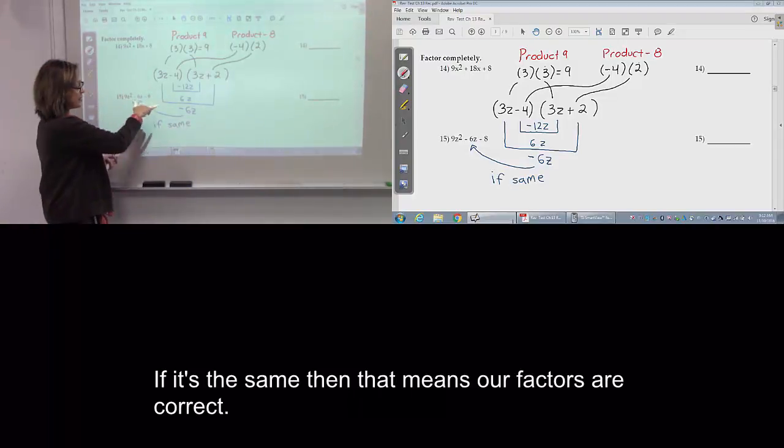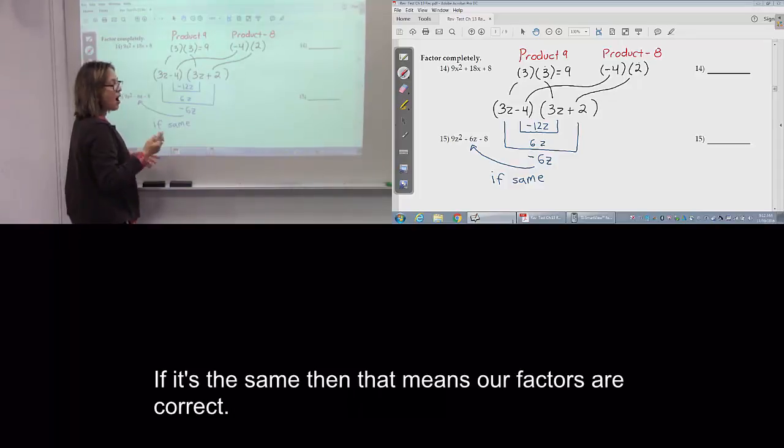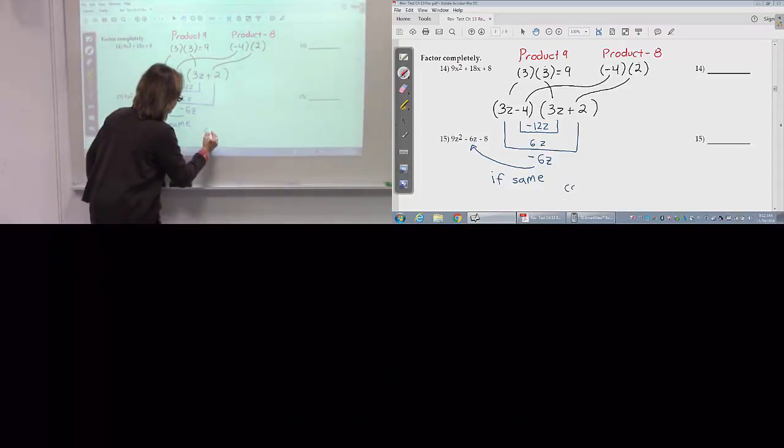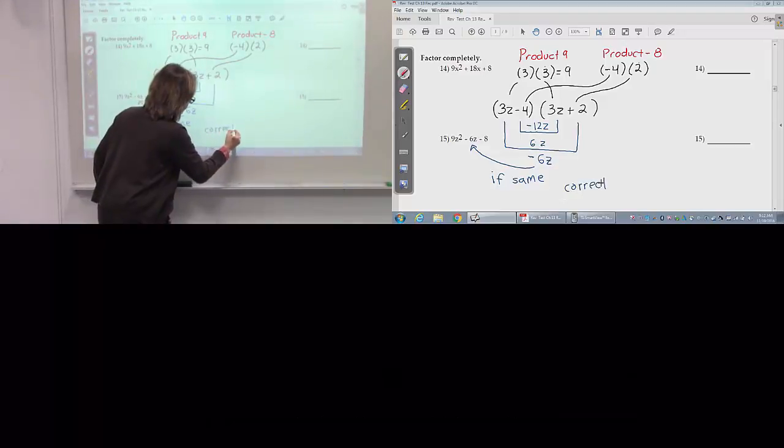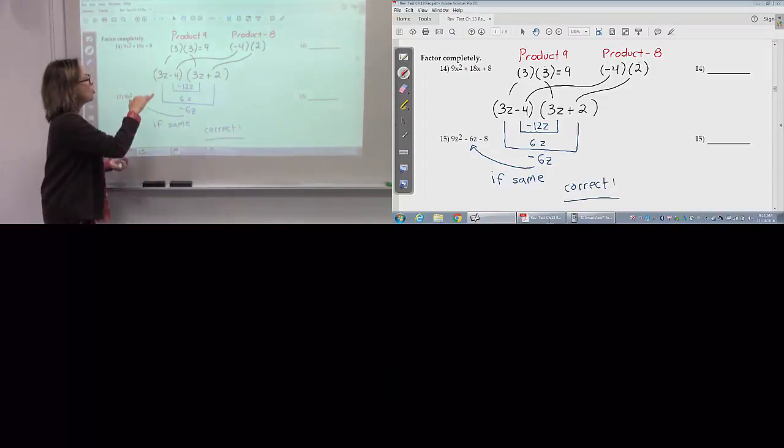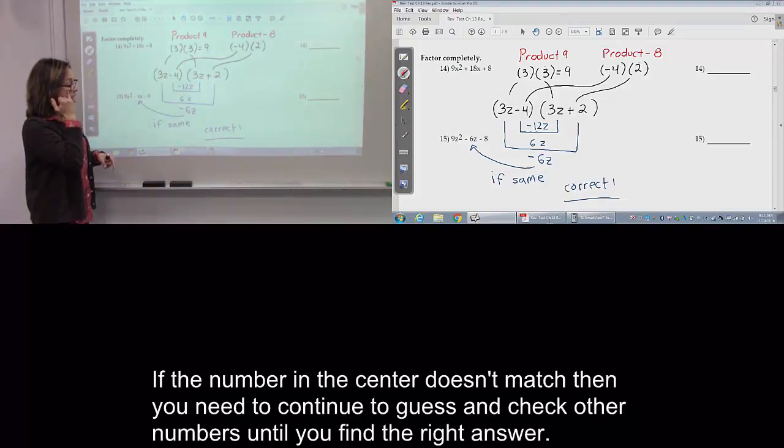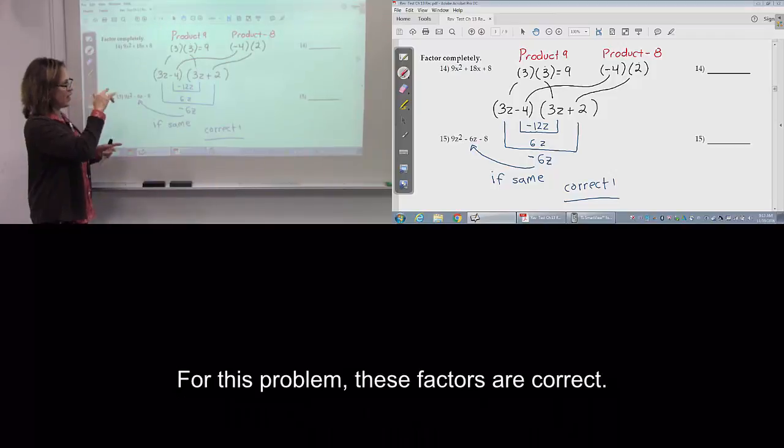If same means our factors are correct, those factors are the answer. If the number in the center is different, both different, you need to guess and check other numbers until you find the right answer. But for that problem, those factors are correct.